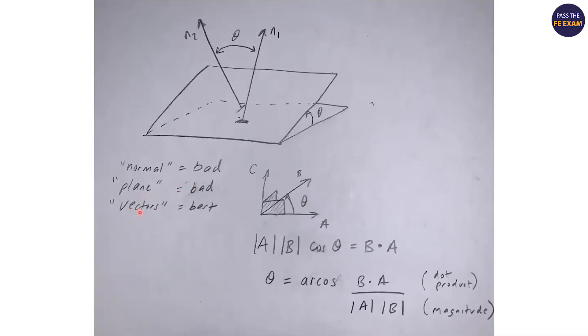Then I typed the word vectors. And the first thing that came up was a little sketch like this, CBA and shows like two planes and there's the angle, it shows theta.